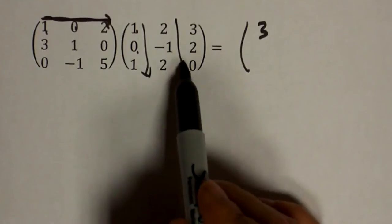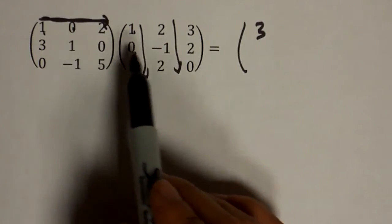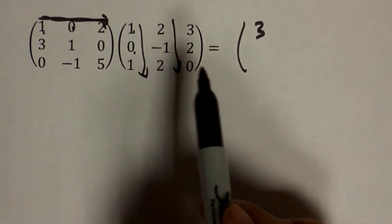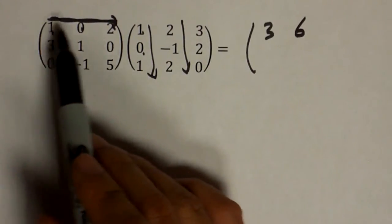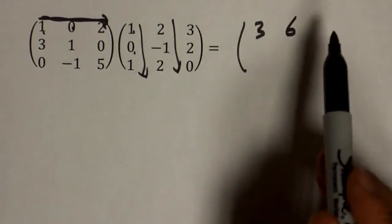Across, down, 1 times 2, 0 times negative 1, 2 times 2, which is 6. 1, 3, 0, 2, 2, 0, 3.